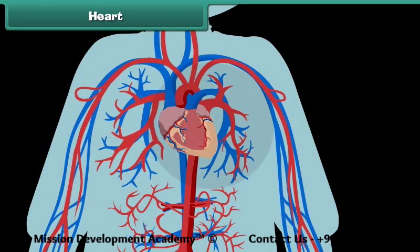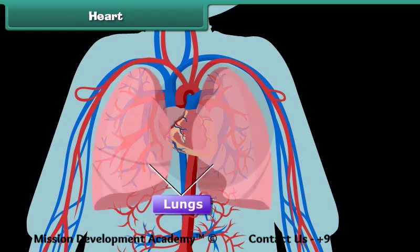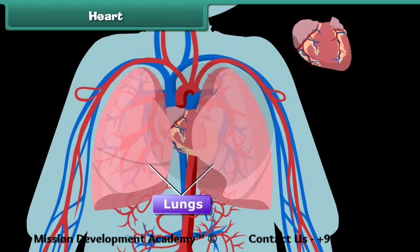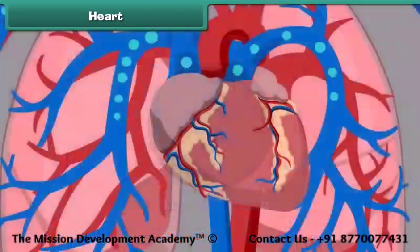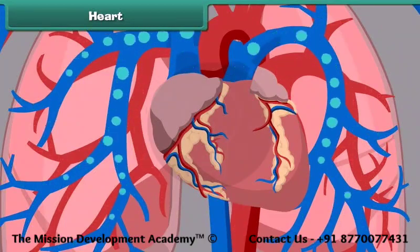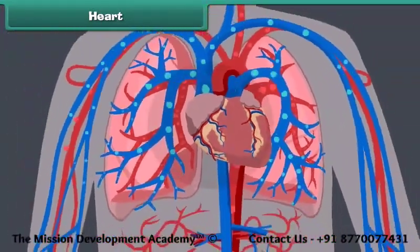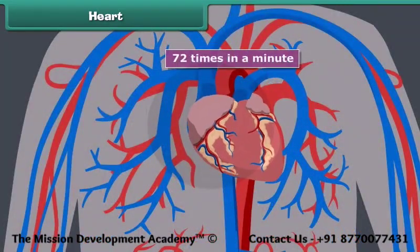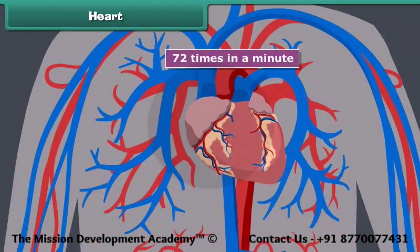Heart. The human heart is located in the chest cavity between the two lungs, a little to the left of the center of the human body. It is conical in shape. The heart of a human being is the size of his clenched fist. It is a bag of muscles responsible for pumping blood filled with oxygen and other nutrients throughout the body. The human heart beats 72 times in a minute and works continuously without getting tired.